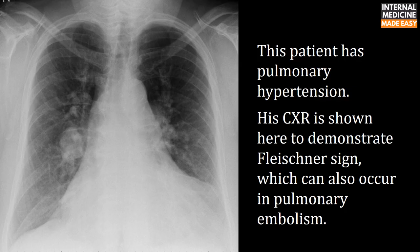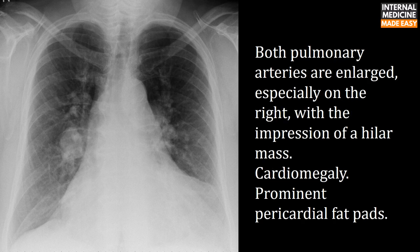This patient has pulmonary hypertension. The chest X-ray demonstrates the Fleischner sign, which can also occur in pulmonary embolism. Both pulmonary arteries are enlarged, especially on the right, with the impression of a hilar mass. There is also cardiomegaly and prominent pericardial fat pads.